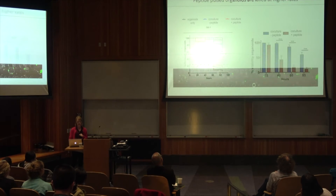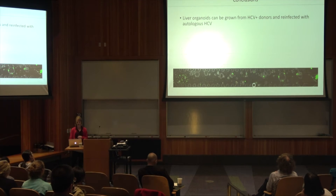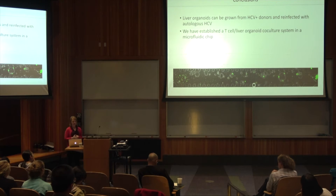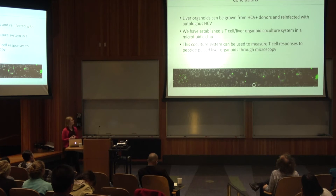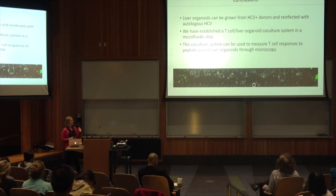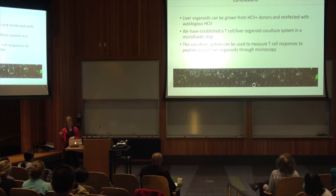To conclude, we're able to grow liver organoids from HCV-positive donors and reinfect them with autologous HCV. We've established a T cell liver organoid co-culture system in this microfluidic chip. This co-culture system can be used to measure T cell responses to peptide-pulsed organoids through microscopy, and it can also be used to measure through flow cytometry — we can actually remove all the T cells and organoids from the chip and run it on flow if we have questions we want to ask about T cells.